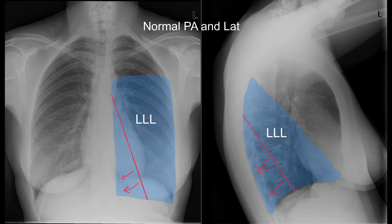When the left lower lobe collapses, it does so by going towards the mediastinum and towards the posterior part of the chest. Because of the volume loss, this results in shift of the hilum down towards the collapse and towards the mediastinum.